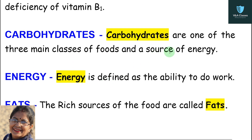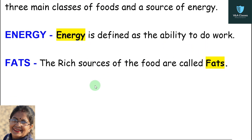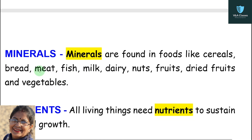Next — carbohydrates: carbohydrates are one of the three main classes of foods and a source of energy. Next — energy: energy is defined as the ability to do work. Next — fats: the rich sources of energy in food are called fats.